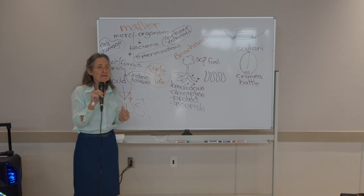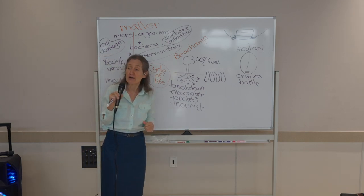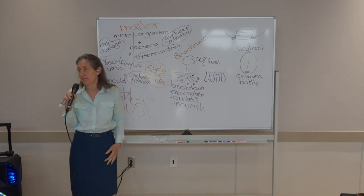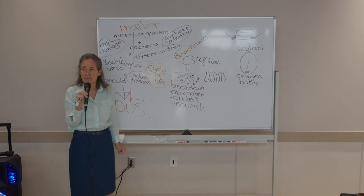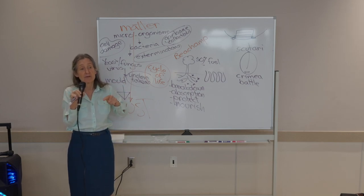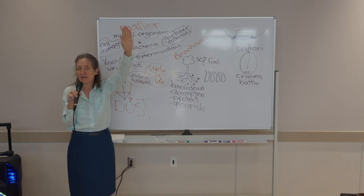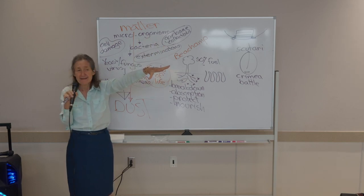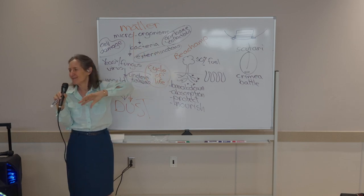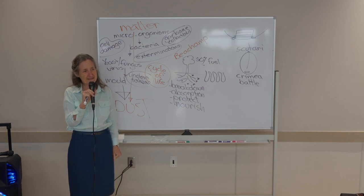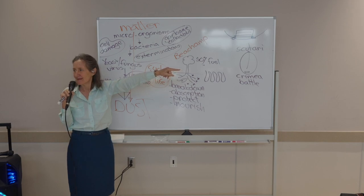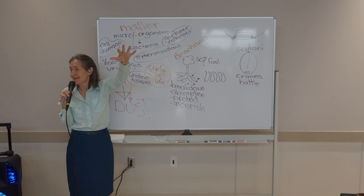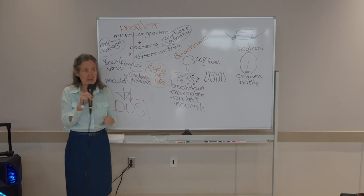Childhood illnesses were already in decline by 80 to 90 percent — sometimes 100 percent — before vaccines were introduced, though we're not told that and it's been removed from medical journals. What caused the drop was increased hygiene, sanitation, and nutrition. An extensive sewage system was put under London by the late 1850s and the water became clean — there's always a reason why.